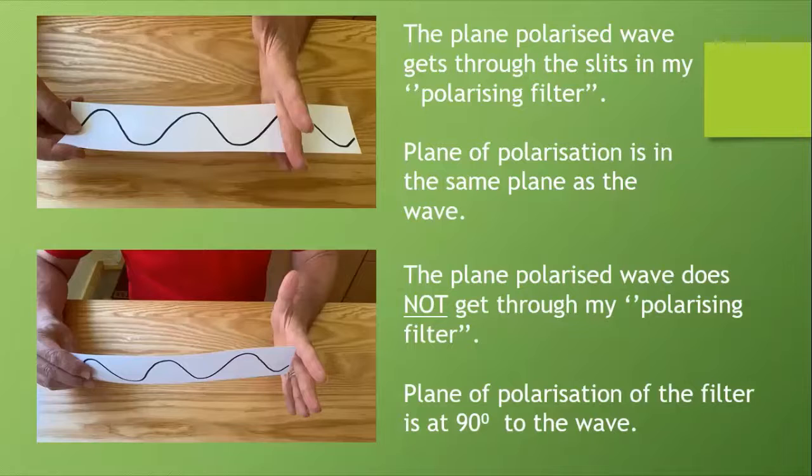Now here we see my plane polarized wave getting through the slits in my polarizing filter. The gaps between my fingers represent that passage through the polarizing filter. The plane of polarization in the top diagram is in the same plane as the wave. But on the bottom diagram, the plane polarized wave does not get through my polarizing filter. The plane of polarization of the filter is at 90 degrees to the wave. This is a simple model. In reality things are more complicated.